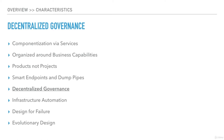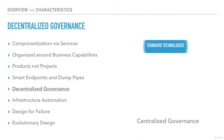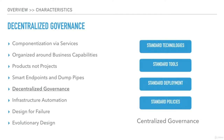Traditional architectures revolved around centralized governance — a central team standardized the technologies, tools, deployment strategies, and other development policies. Microservices architecture goes against centralized governance, as it restricts the independent development of services. The governance aspects cannot be absolute zero, but should be minimized as much as possible.